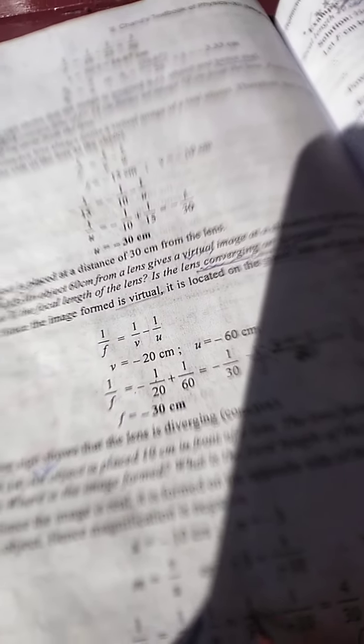So 1/f = 1/30 - 1/(-10). Minus minus becomes plus. Take LCM and do the calculation, you will get 4/30. So f = 30/4 = 7.5 centimeters. Like this you have to do.